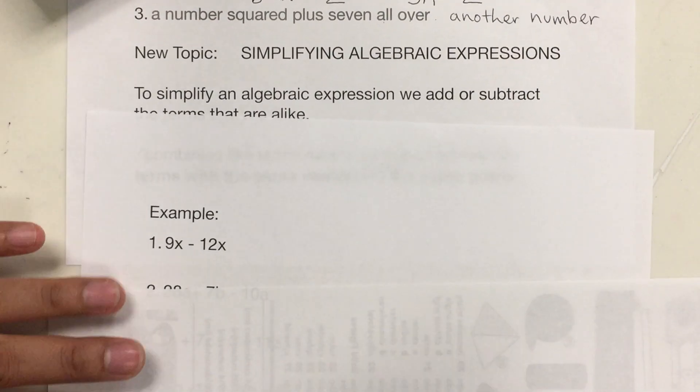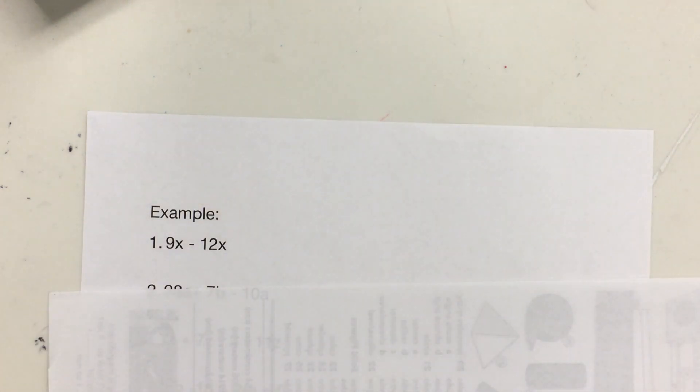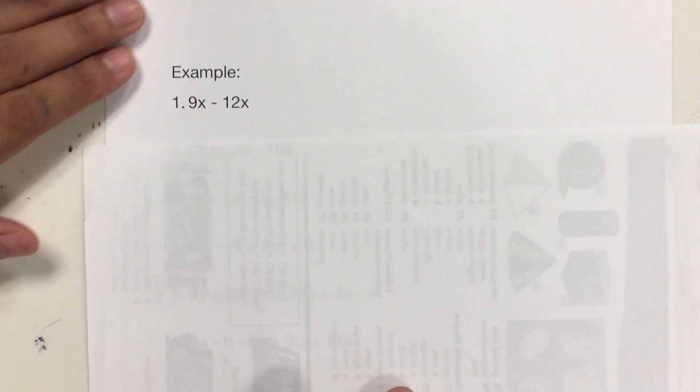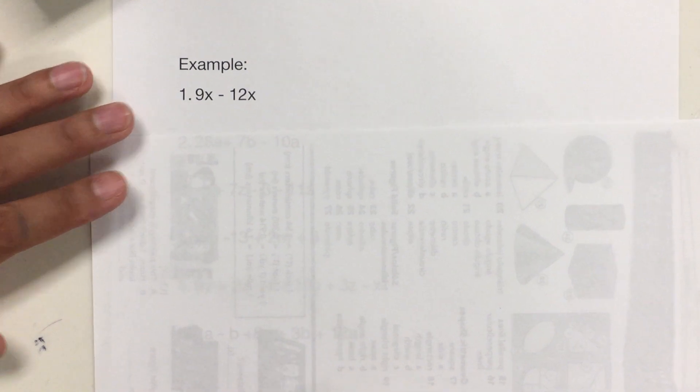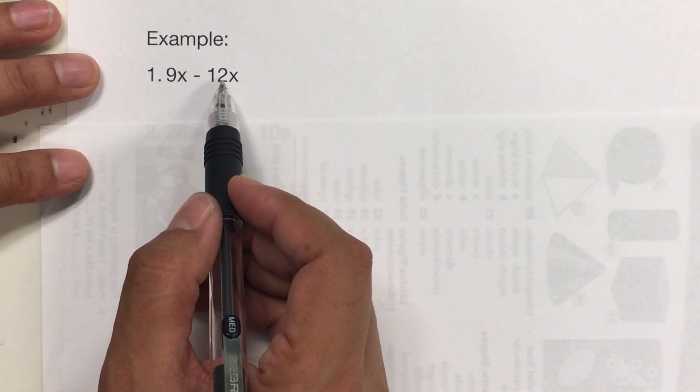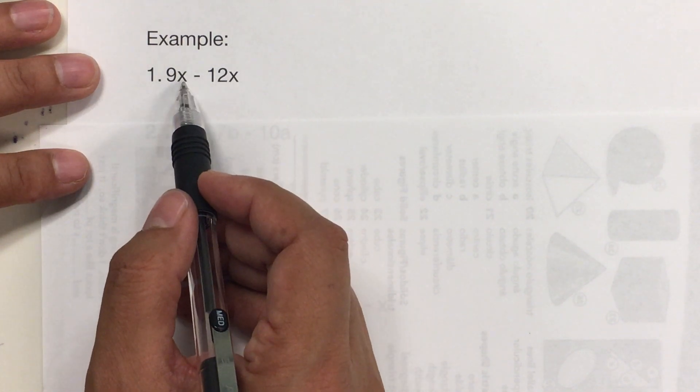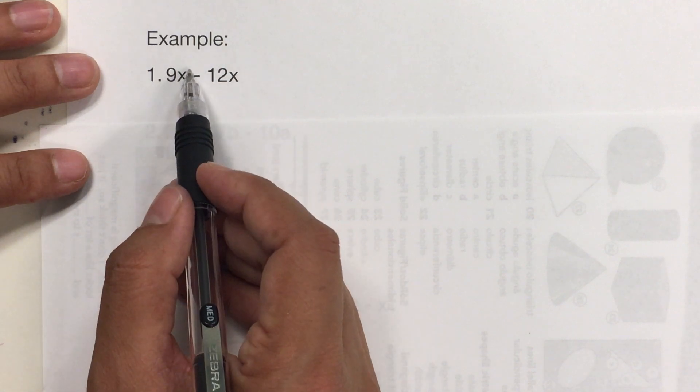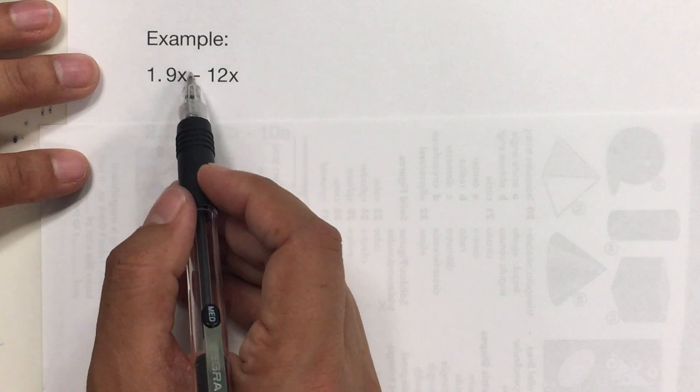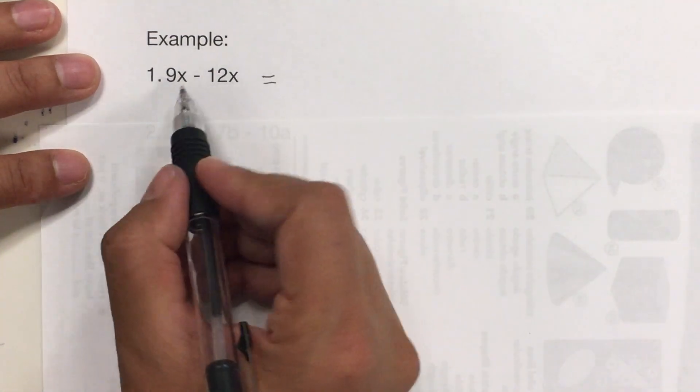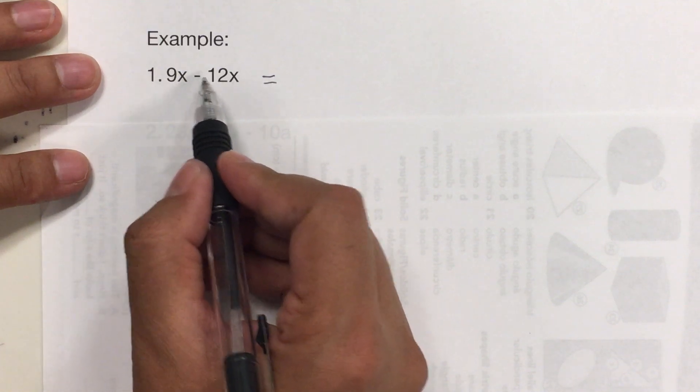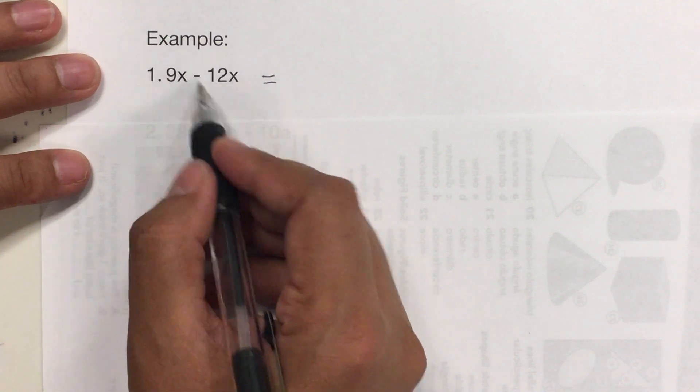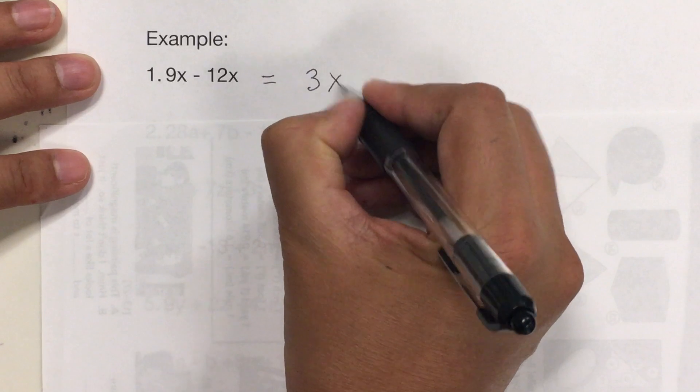And so, let's start with the examples. Remember that you can always pause the video if you need to take notes. But here are some examples. So, if I have 9x minus 12x, these have the same variable, and both have the same power. The power is the 1. I call it chiquitito. So, when we have a positive and a negative, we subtract and leave the sign of the bigger 1. So, it's going to be 12 minus 9 is 3x.